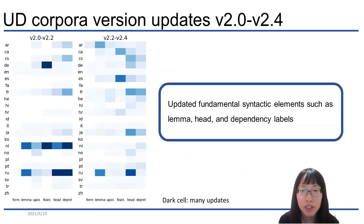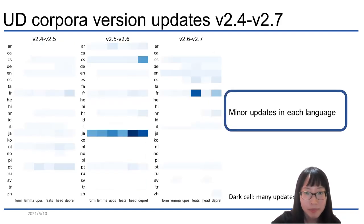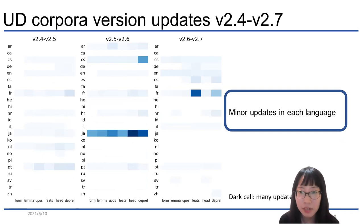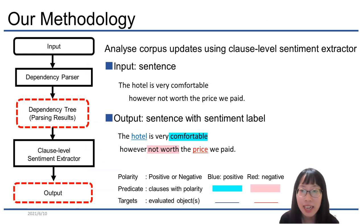In version 2.0 to 2.4, most of the modifications in the UD corpus are focused on fundamental syntax elements, such as POS tags and dependency labels, and universal features were incrementally appended. On the other hand, in version 2.4 to 2.7, the major update is shifted towards language-specific features. We now introduce our methodology to clarify how UD is updated. By evaluating the performance of application tasks using UD, we can examine whether the UD corpus has been improved or not from a different perspective.